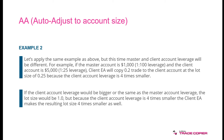If the client account leverage were the same or bigger than the master, the lot size would be one full lot because the client account is five times bigger. But because the client account has four times smaller leverage, the client EA makes the resulting lot size four times smaller as well, so the one full lot becomes 0.25. Without this adjustment, the client EA would risk the client's capital through margin calls and stopouts.